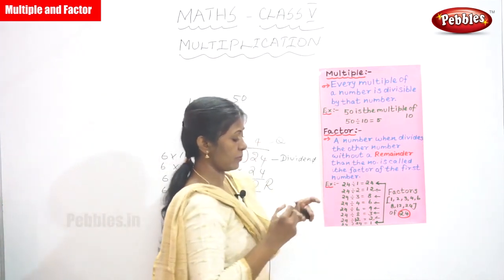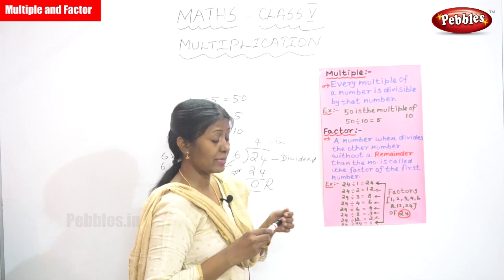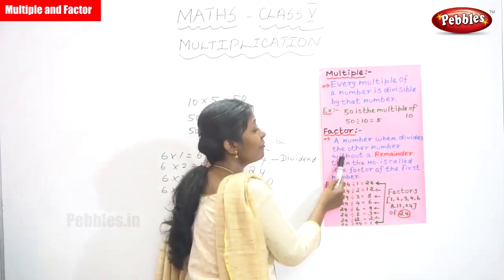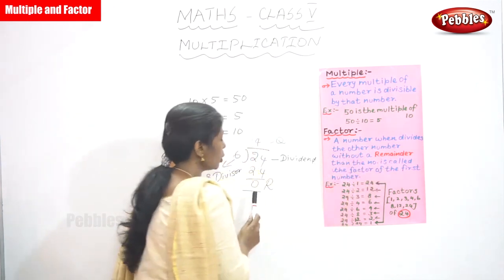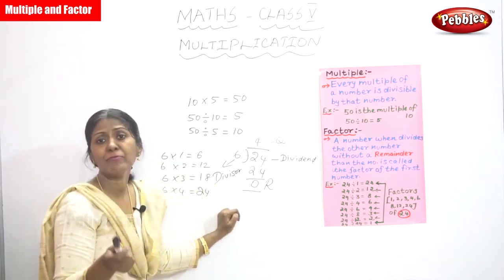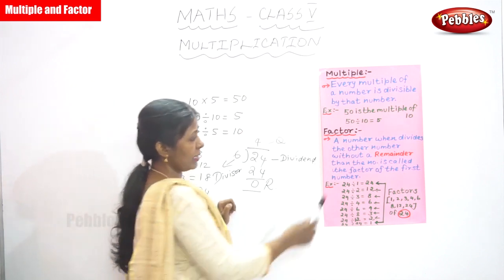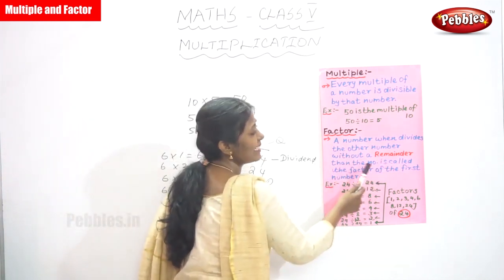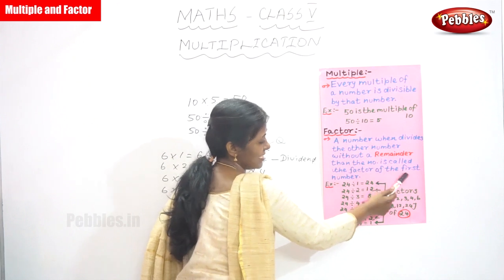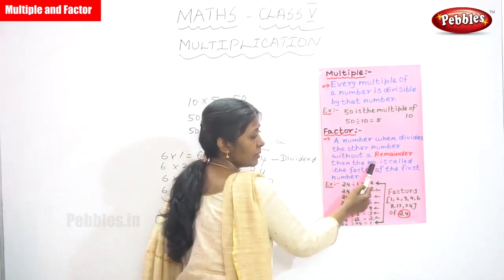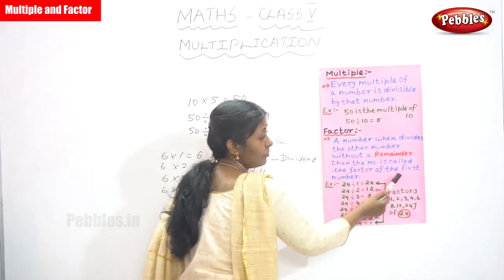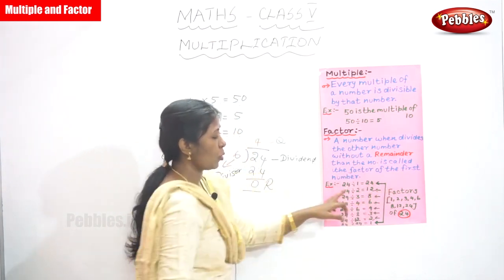That is what is given in the definition. Without a remainder means you will get 0 — no number will come for the remainder. Without a remainder, that number is called the factor of the first number.